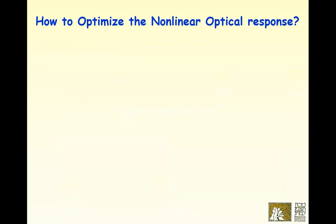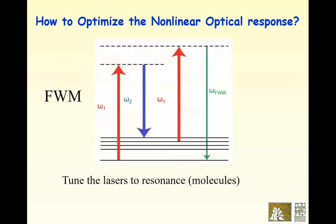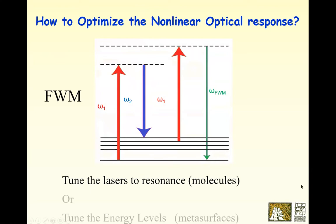The question I'm asking is how to optimize the non-linear response. Suppose you have your favorite non-linear process — in my case it's four-wave mixing or a CARS process, where you have two red and one blue input beams to generate omega-4 wave mixing. In molecular spectroscopy you tune your lasers to the resonant frequencies; in metasurfaces you tune your energy level, but the physics is basically the same.